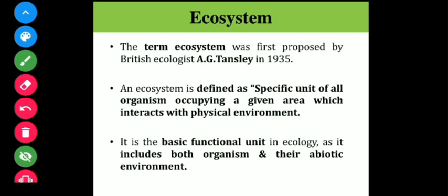As the definition says, the ecosystem is a dynamic entity composed of a biological community and the associated abiotic factors. The biological community means living organisms — plants, animals, microbes — and the associated abiotic factors mean their physical environment where they are surviving. This term 'ecosystem' was first proposed by A.G. Tansley.